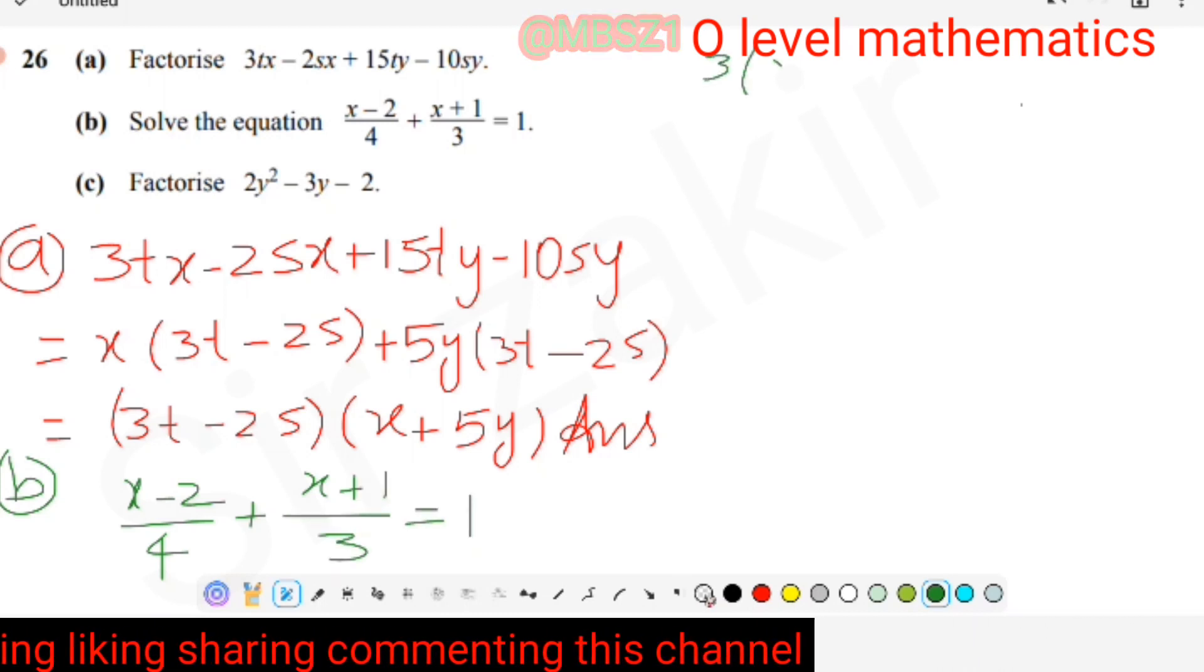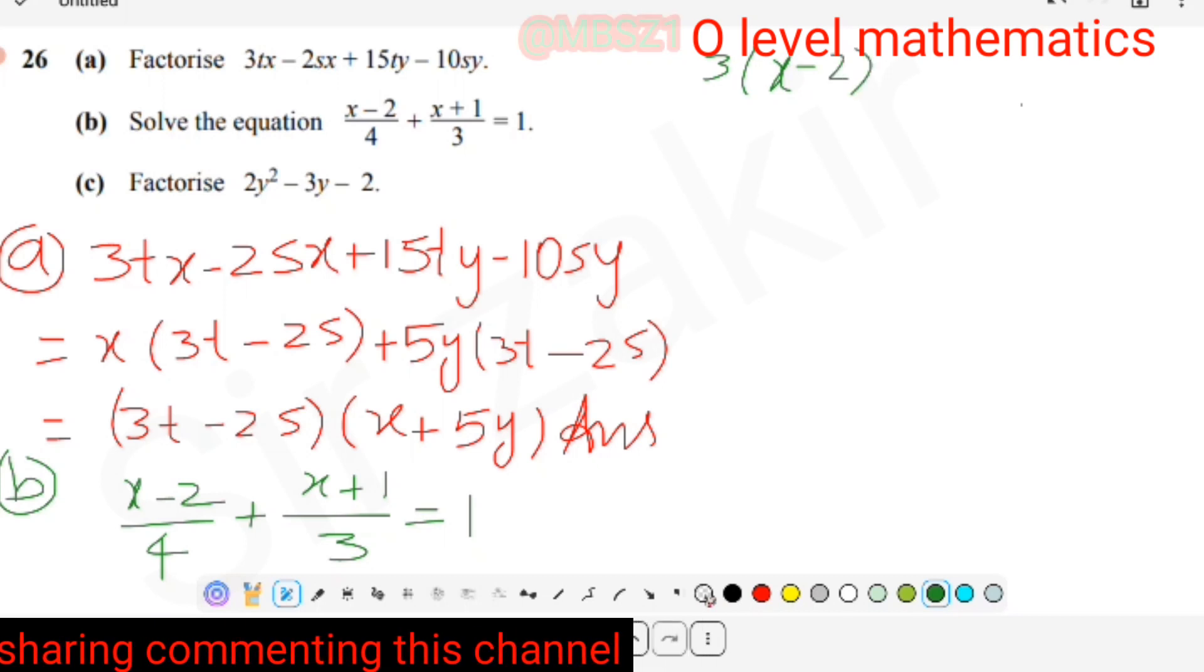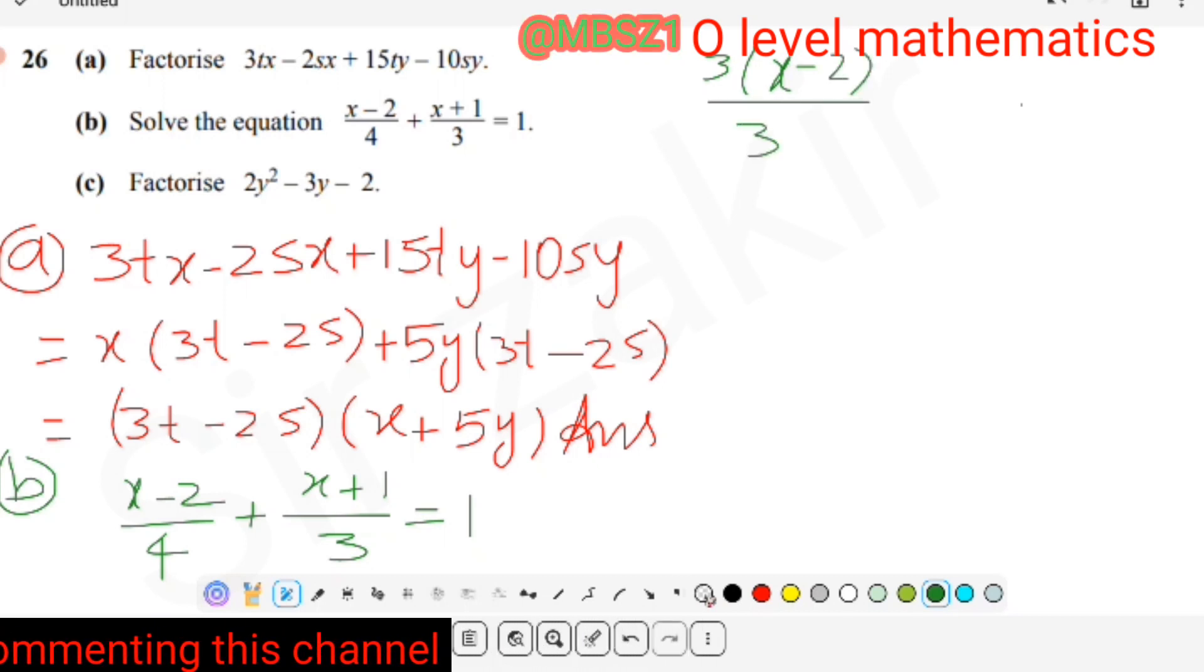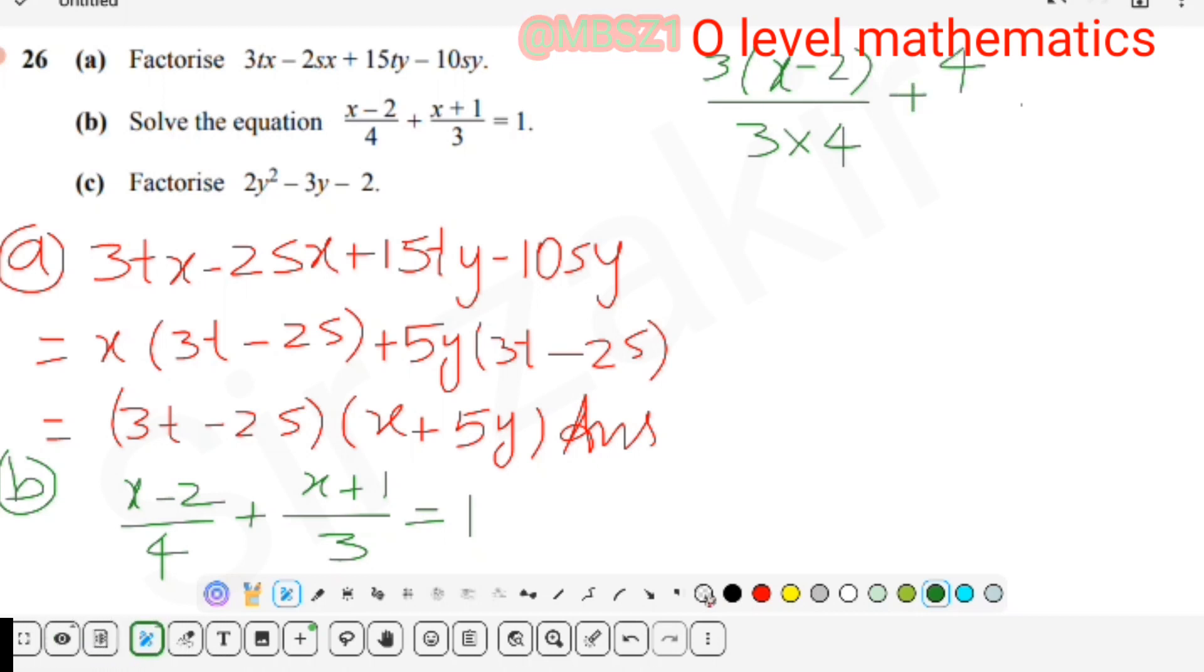When we multiply by 3 with X - 2 and 3 with 4 in denominator, and multiply by 4 with X + 1 and 4 multiply by 3 in denominator equals 1. Now we see that denominator of both fractions is 12, so 12 is the LCM.